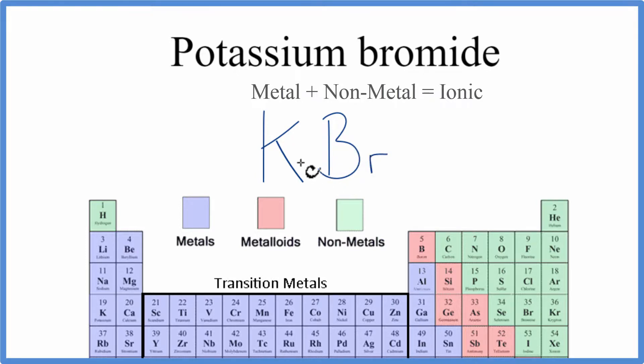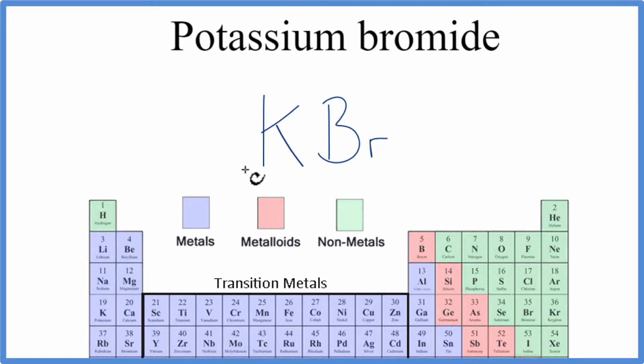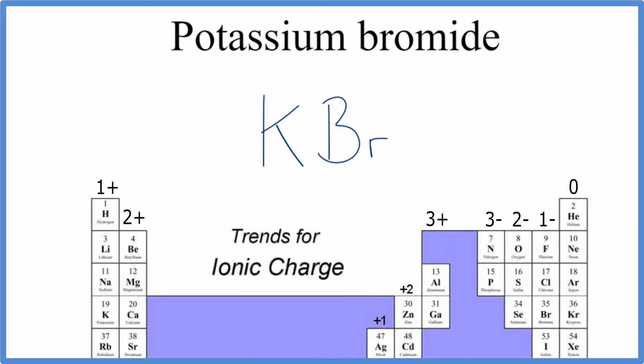And when we have ionic compounds, we need to take into account the ionic charge on each of the elements. So, back to the periodic table. Potassium has a 1 plus ionic charge. Bromine has a 1 minus ionic charge.